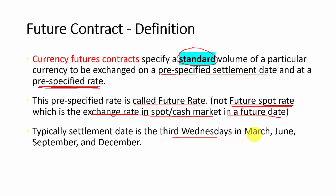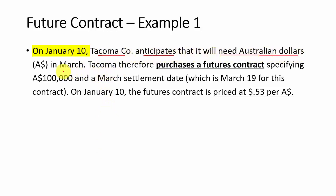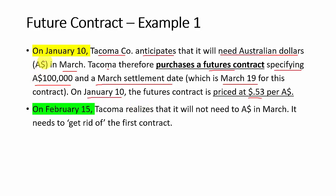Typically, the settlement date for a futures contract is the third Wednesday in March, June, September, and December. In the first example, on January 10, Tacoma company anticipates that it will need Australian dollars in March. Therefore, Tacoma decided to purchase a futures contract specifying 100,000 Australian dollars with a settlement date in March (the 19th). On January 10, the futures contract is priced at 53 cents per Australian dollar.